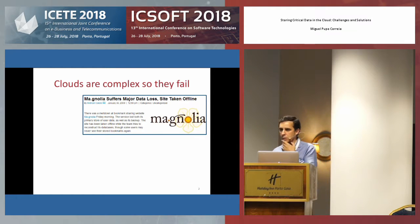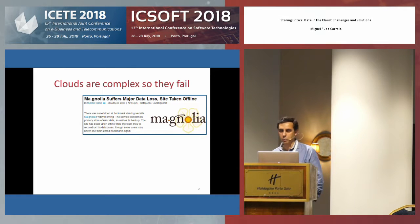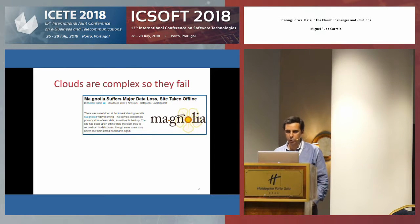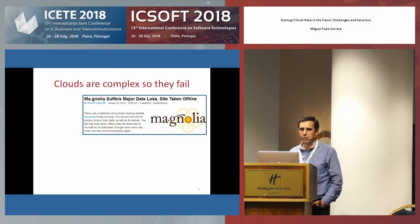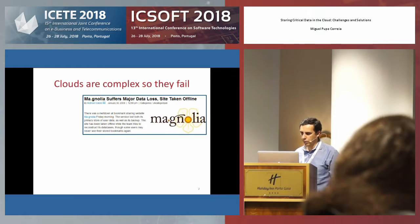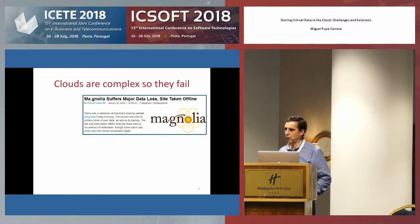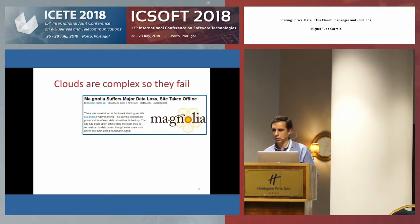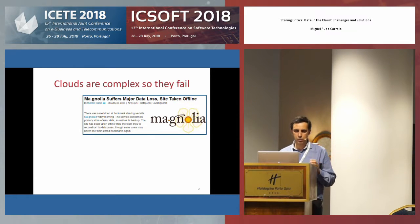This first example has a few years — it was supposed to be new when I first put it in the slides, but now it's not so new. There was an application that ran in the cloud called Magnolia. It was working normally, then they had some problem, they lost the data, and they lost the backup of the data. They lost everything, and so they simply shut down.